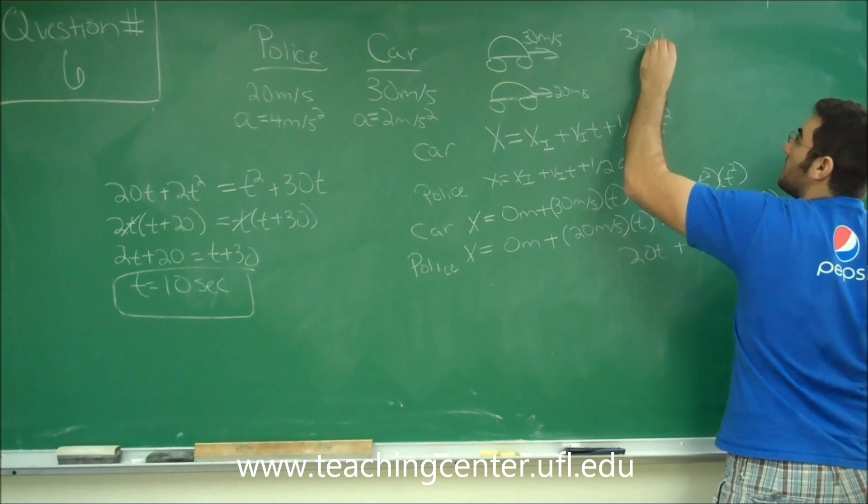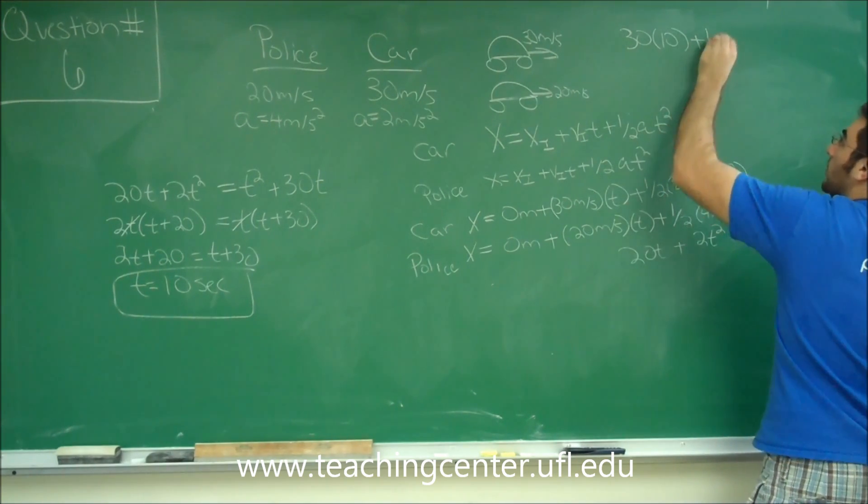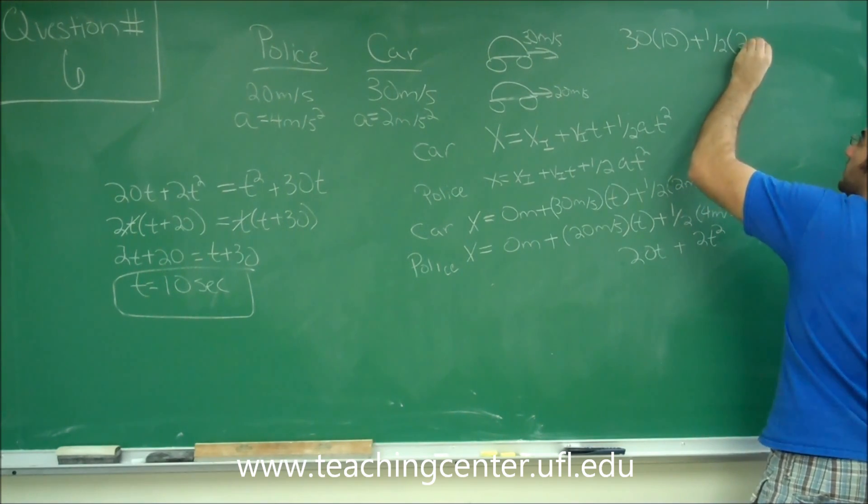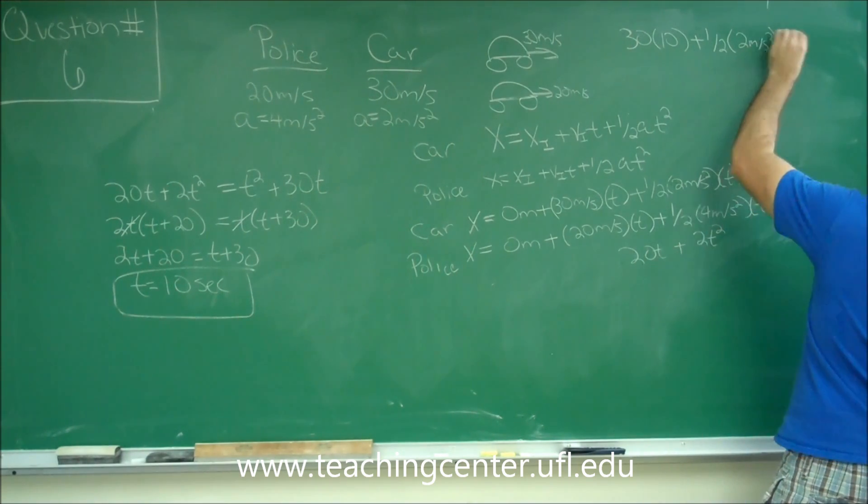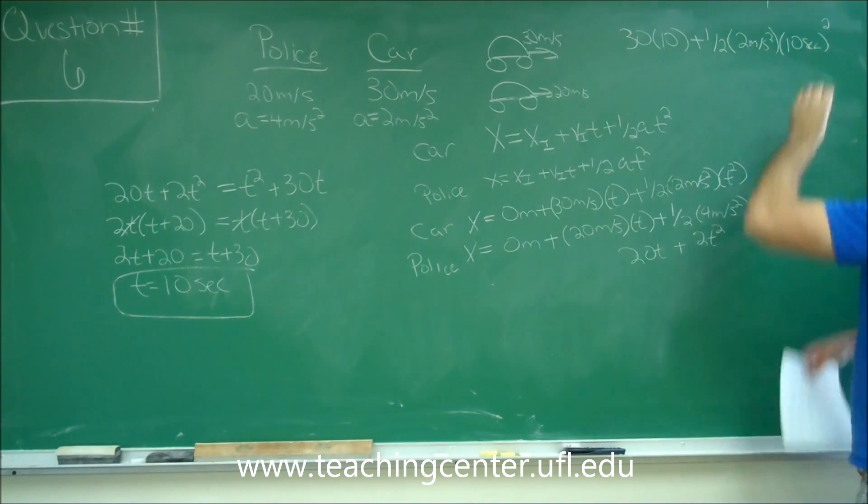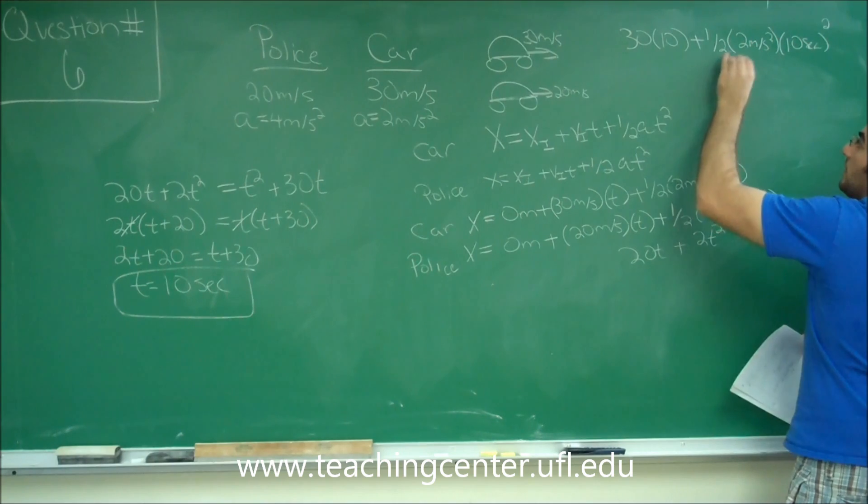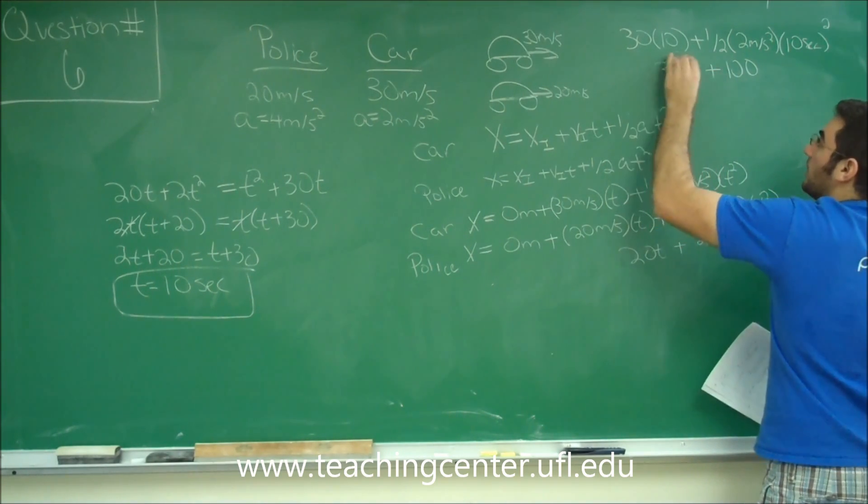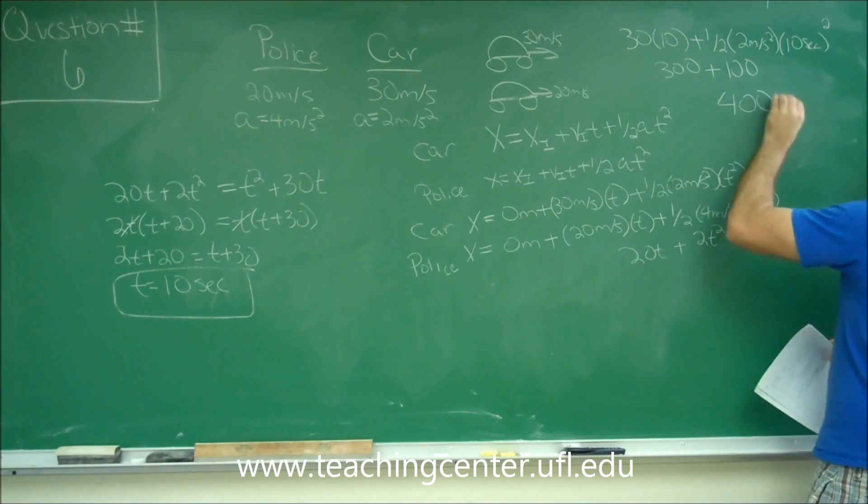30 times 10 plus one half 2 meters per second squared times, and we said we got 10 seconds, right? Squared. So this is 100, 200 divided by 2. 100 plus 300 for a total of 400 meters.